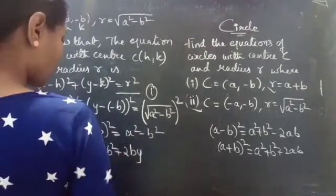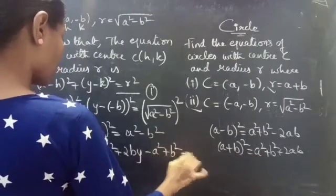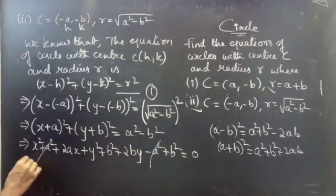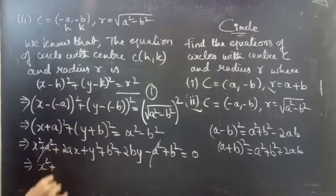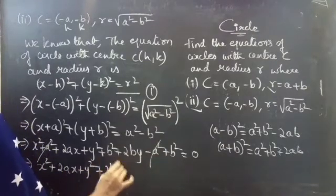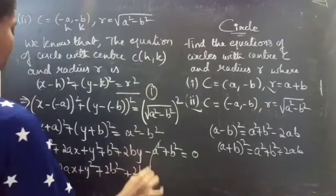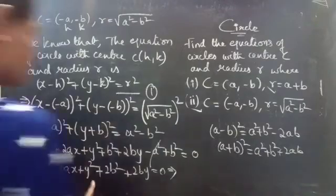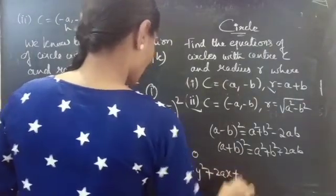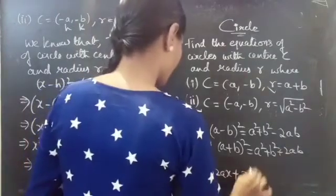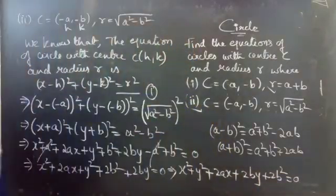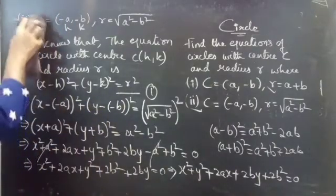Taking the right-hand side to the left, we get x squared plus a squared plus 2ax plus y squared plus b squared plus 2by minus a squared plus b squared equals 0. Here a squared cancels, and b squared plus b squared gives 2b squared. So the required equation is x squared plus y squared plus 2ax plus 2by plus 2b squared equals 0.